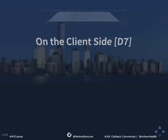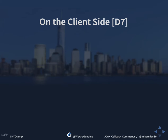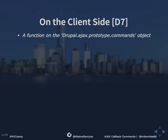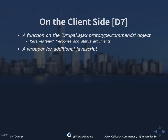Let's look at what's going on under the hood. On the client side of a command in Drupal 7, it's just a function attached to the drupal.ajax.prototype.commands object. This function receives three arguments: 'ajax', which contains information about the Ajax request and the element triggering it; 'response', which contains data sent back from the server — any data to be populated on the page; and a 'status' argument for the status of the page, such as 404, 500, or 200.